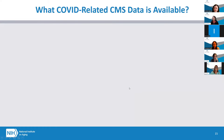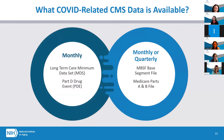All data types are available annually. For COVID research, MDS, PDE, MBSF base, and Medicare Parts A and B can be available monthly or quarterly — as often as monthly if the study decides to request it.